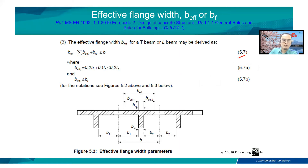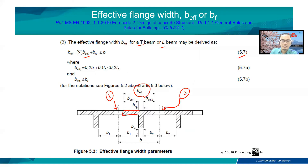Equation 5.7 in Eurocode 2 is the formula for determining the effective flange width, either for a T-beam or an L-beam. It is the summation of B_effective for flange number 1 — the width of flange from slab number 1 — plus the width of the beam, plus the effective width of flange from slab number 2. The total width produces the effective flange width for the whole beam.